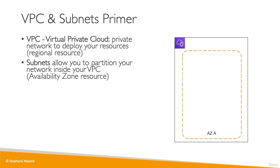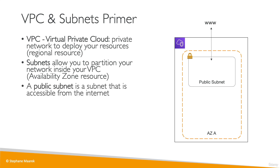Within AZ-A, we're going to have a public subnet. This public subnet is special because it is accessible from the internet. As you can see on the diagram on the right-hand side, the public subnet has direct connectivity to the internet, and the internet can directly reach our public subnet.